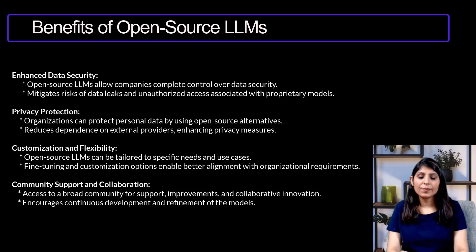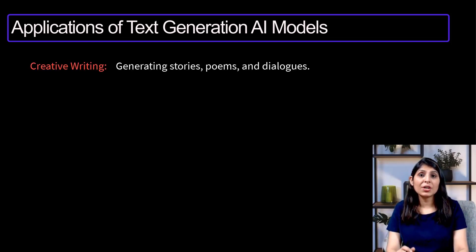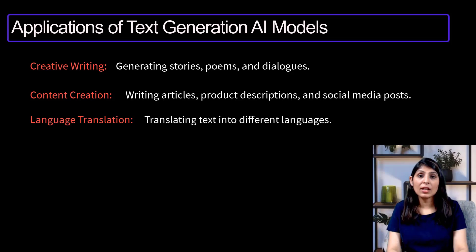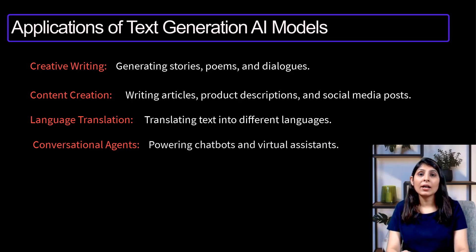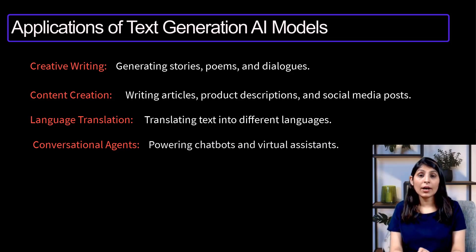Now let's look at a few applications where we can use LLMs. Text generation AI models can be used for creative writing — generating stories and poems — writing articles, product descriptions, and social media posts. We can also use text generation models for language translation and for conversational agents like chatbots or virtual assistants with natural language processing. For image generation models, we can use them for creative arts, generating unique artwork based on textual descriptions.